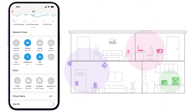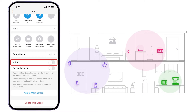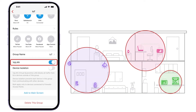Devices within a VQLAN-enabled group can only talk to each other and access the Internet. They're blocked from accessing other devices outside the group.